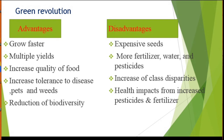Disadvantages of Green Revolution: expansion of seeds requires more fertilizers, water, and pesticides. The results were impressive but not a hundred percent successful — only Punjab and Haryana states showed the best results. Other drawbacks include the increase of class disparity and health impacts from increased pesticide use.